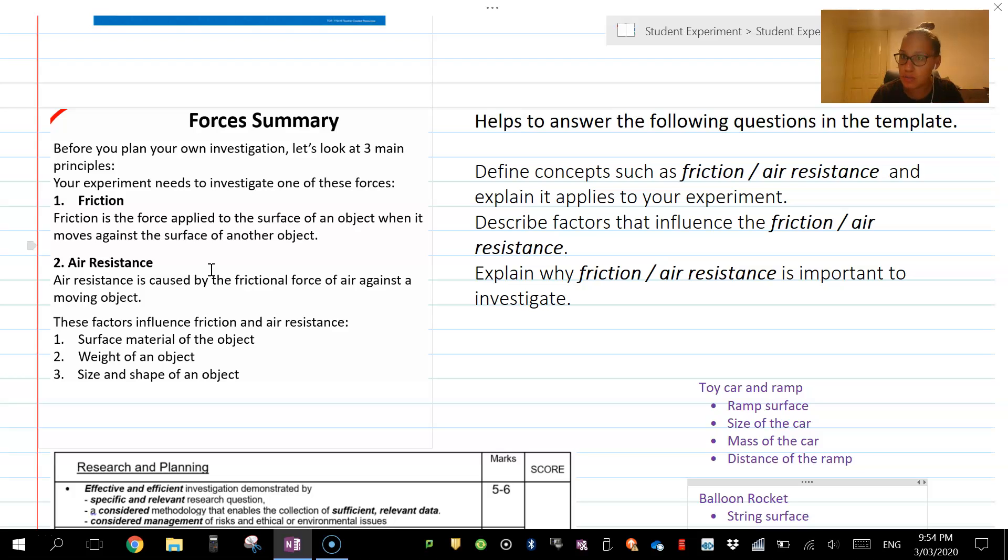In our junior version of this, or our year seven version, we've given you a couple of questions. These are the questions here—help answer the following questions in the template. They're from your template in your booklet; I just don't have a hard copy with me to show you. It's define, describe, and explain those three concepts.